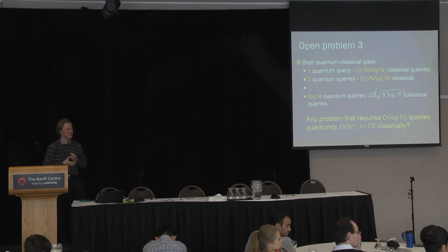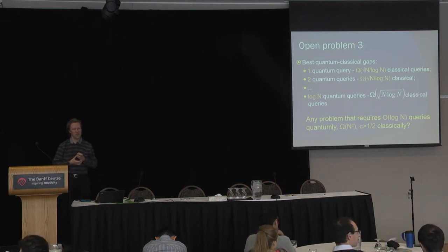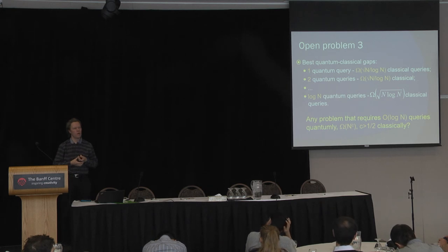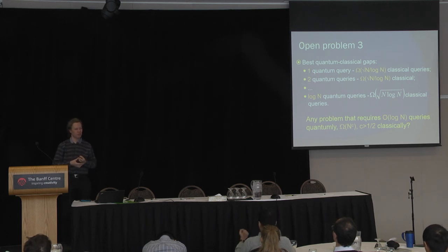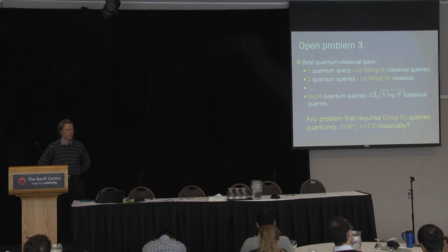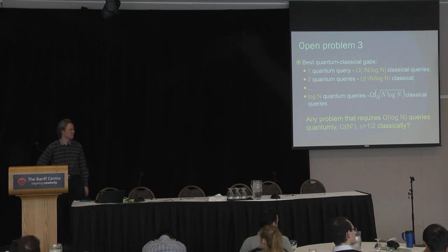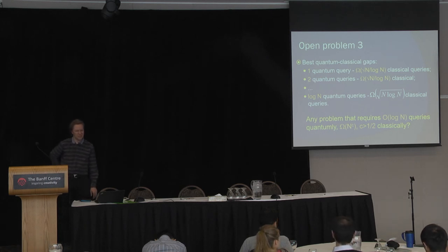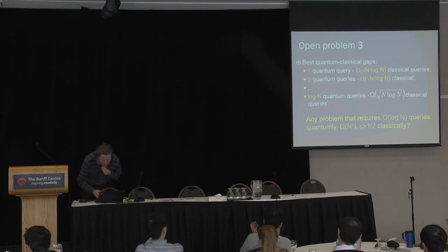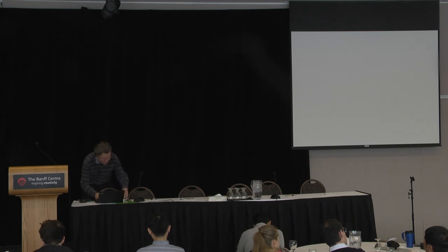A question from the audience: how critical was the Fourier transform to the construction? If you were to use a different kind of transform like the Schur transform, would you see the same separation in complexity? I think it would work with pretty much any transformation that has all entries small — any unitary with all entries small. Though I'm not completely sure, probably it's not very essential. Are there other questions? If not, let's thank Andres again. We have about a half-hour break and then we'll start.